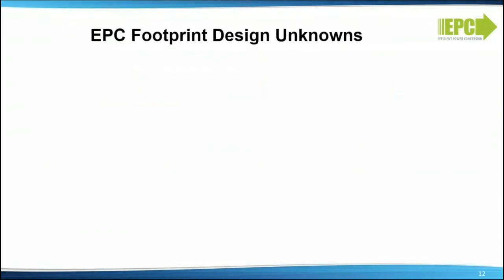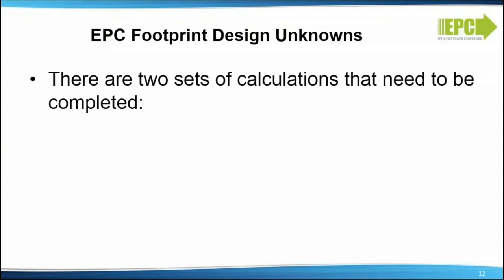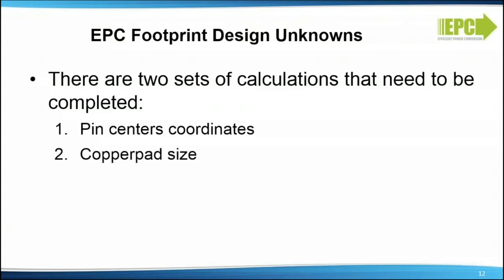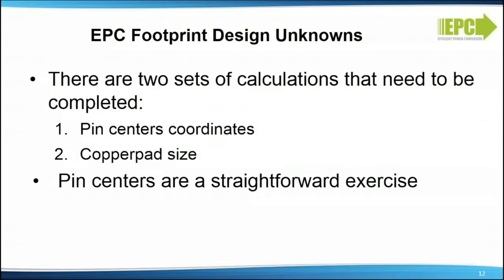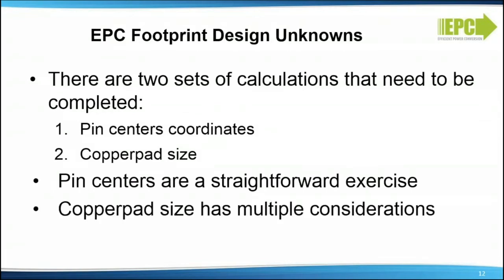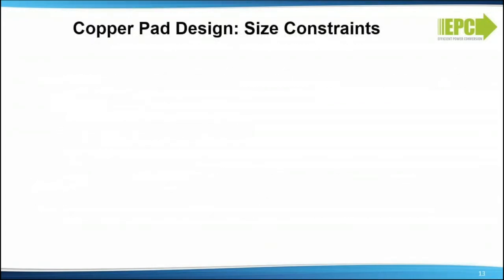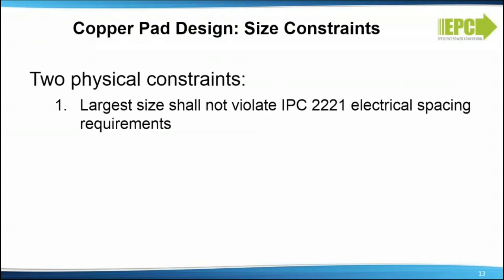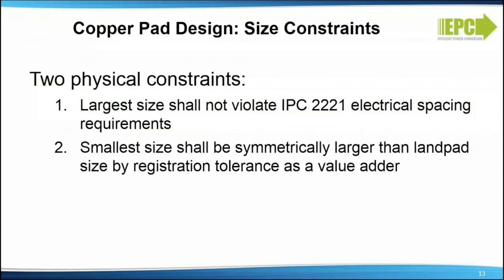EPC footprint design unknowns: there are two sets of calculations that need to be completed. First is pin center coordinates; the second is copper pad size. The pin centers are a straightforward exercise; however, the copper pad size has multiple considerations. Copper pad design size constraints: there are two physical constraints. First, the largest size shall not violate IPC 2221 electrical spacing requirements. Second, the smallest size shall be symmetrically larger than the land pad size, but the registration tolerance has a value adder.